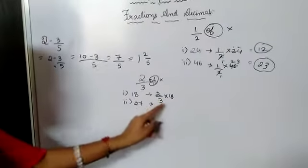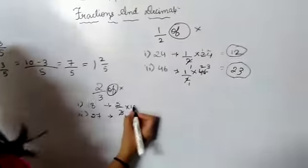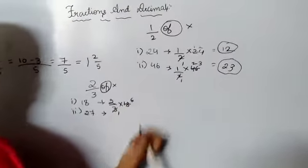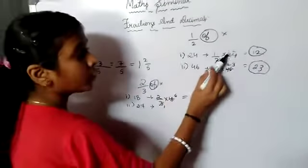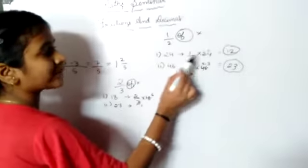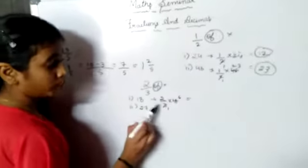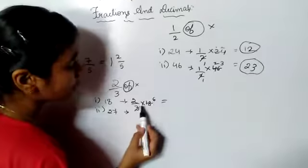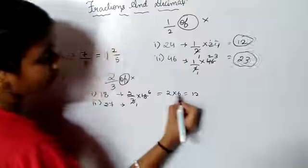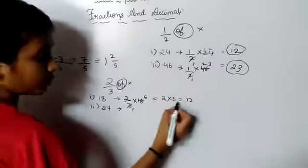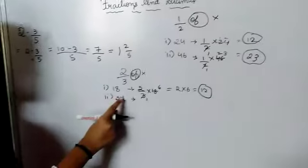We can cancel 18 by 3: 3 sixes are 18, so 18 divided by 3 gives 6. In the previous problem we had 1 in the numerator, but here the numerator is 2. So we have to multiply: 2 into 6 equals 12. Six twos are 12. So the answer is 12.